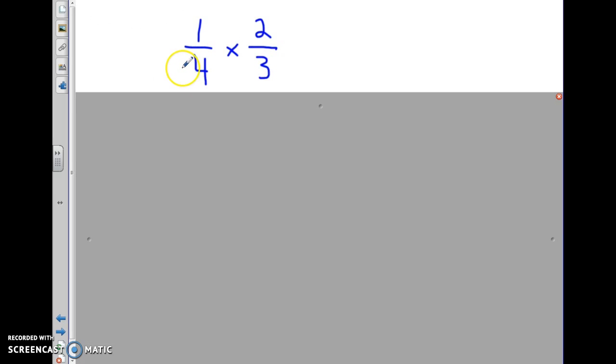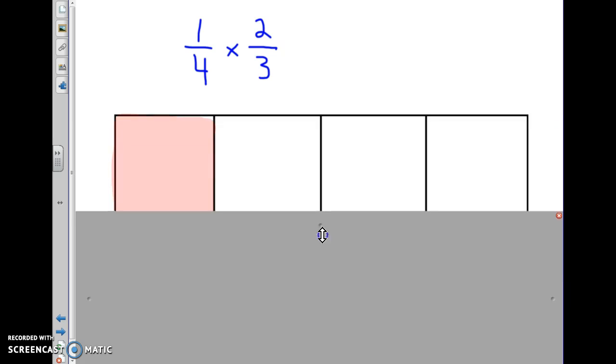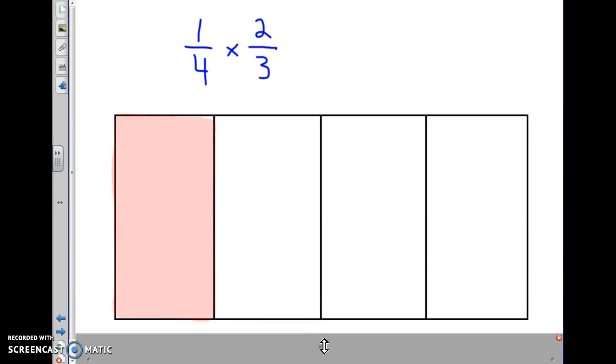Do another one. If I have 1 fourth times 2 thirds, I'm going to do a visual for this again here. I'm going to do 1 fourth first. And it doesn't really matter which one I do first. I just happened to use the first factor here, which was 1 fourth. I first made the 1 fourth by taking this rectangle, dividing up into 4 equal parts and shading. So, that gives me the denominator and then shading 1 of those parts. That gives me the numerator. So, 1 out of the 4 equal parts is shaded.